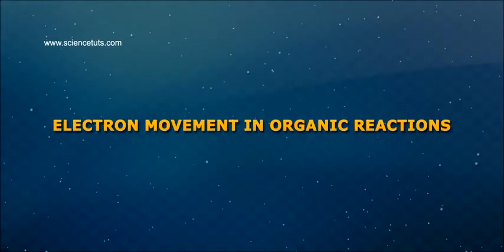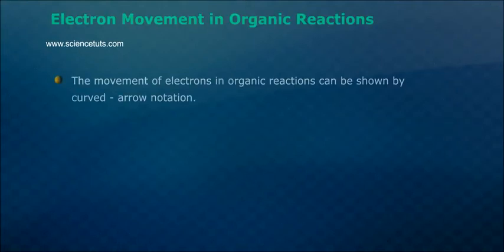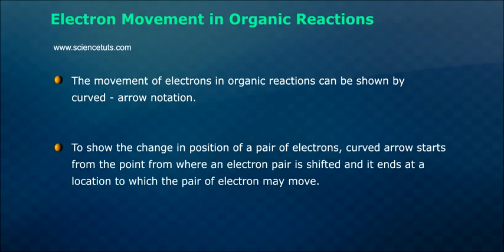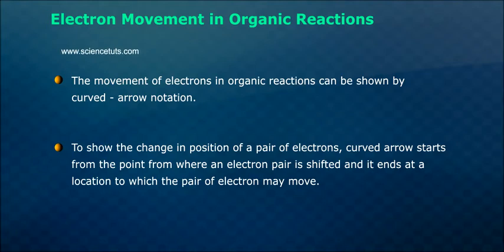The movement of electrons in organic reactions can be shown by curved arrow notation. To show the change in position of a pair of electrons, a curved arrow starts from the point from where an electron pair is shifted and ends at the location to which the pair of electrons may move. Presentation of shifting of an electron pair is given below.